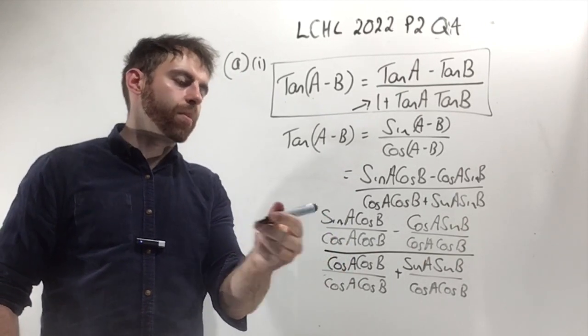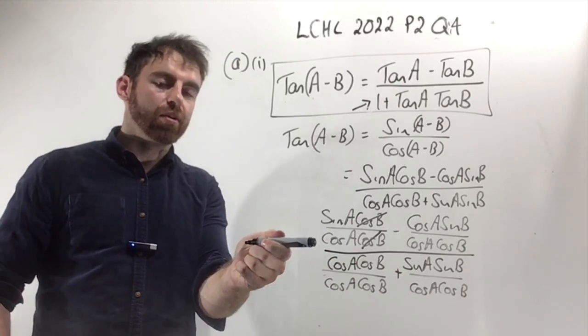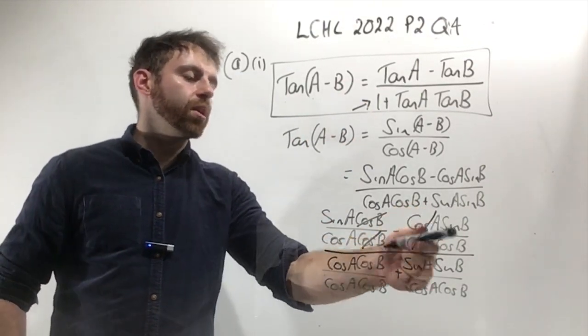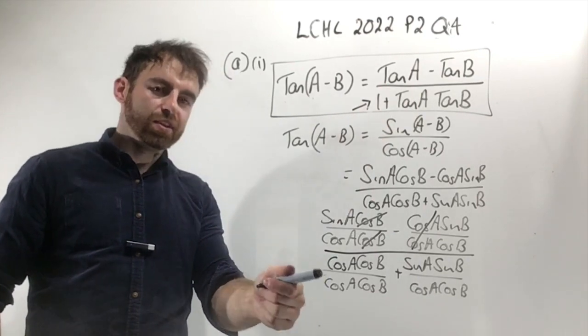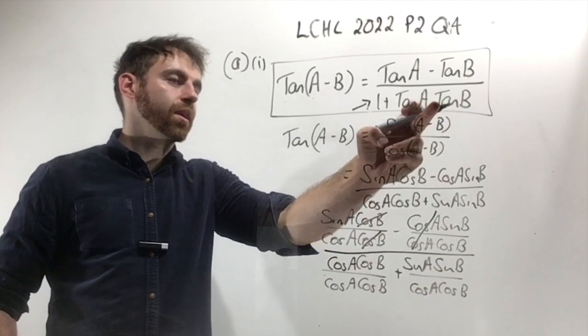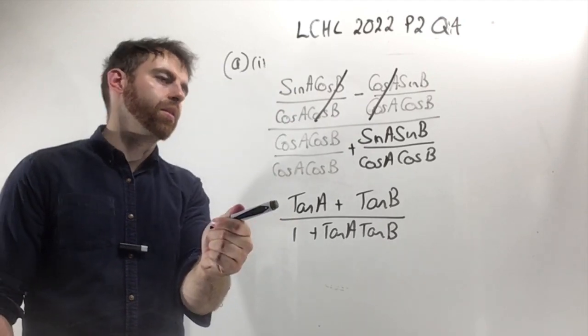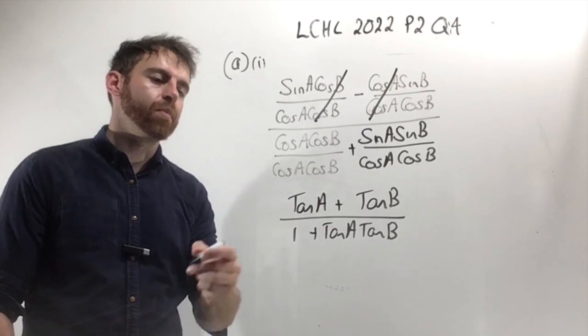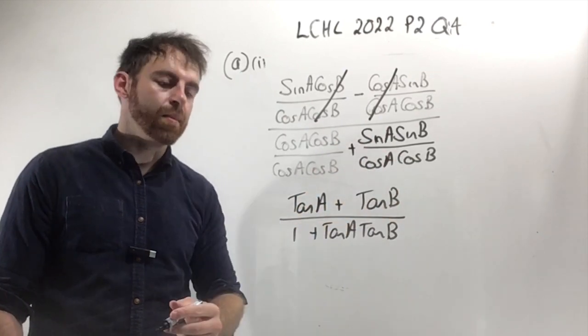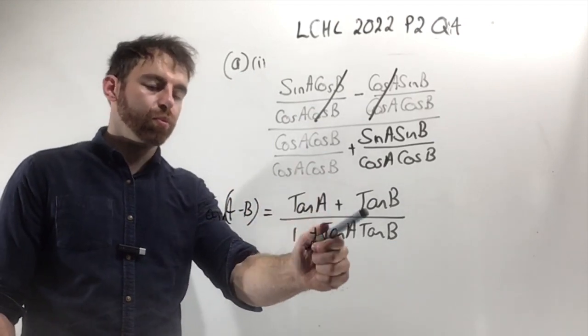Let's look at the first fraction on the top. The cos B on the bottom divides into the one on the top, so I'm just left with sine A over cos A, which is tan A. For the second fraction, the cos A's cancel, leaving sine B over cos B, which is tan B. The bottom becomes 1 plus sine A over cos A times sine B over cos B, which is 1 plus tan A tan B. So I originally started with tan A minus B and ended up with the other side of the equation. That's your proof.